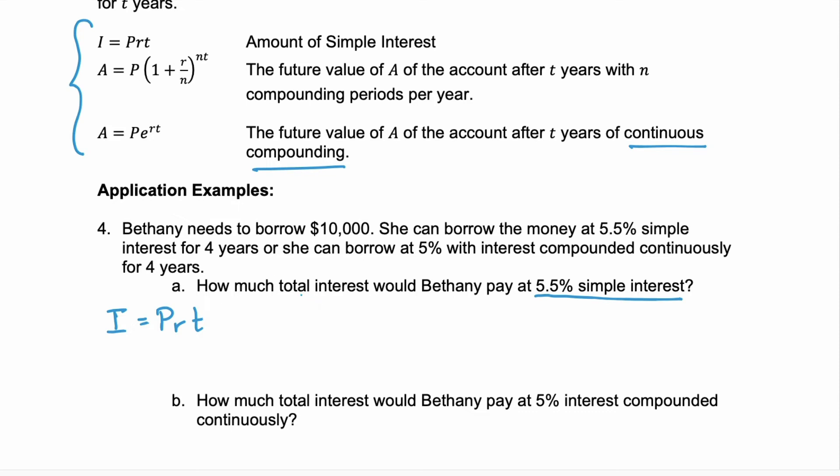Now we just need to determine what are we trying to find and what information are we given. We're asked how much total interest, so we're trying to find I, the interest. And we know the principal from the very beginning of the problem was $10,000, so she's borrowing $10,000. R would be our interest rate as a decimal, so 5.5% is 0.055. And T is the time. Well, she's borrowing for 4 years. Multiply those together and we get $2,200.